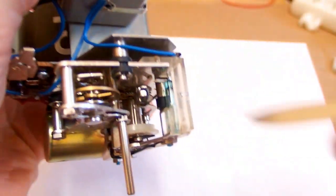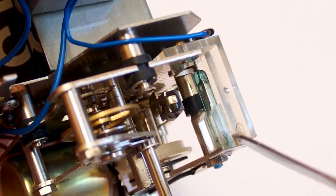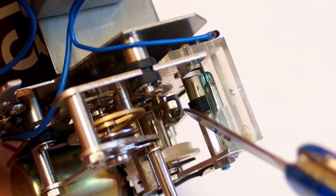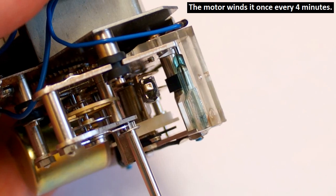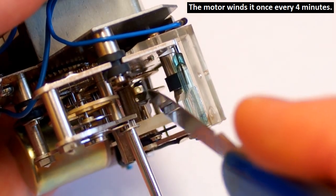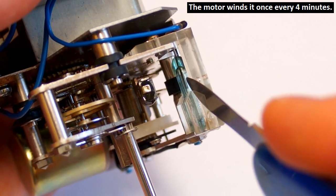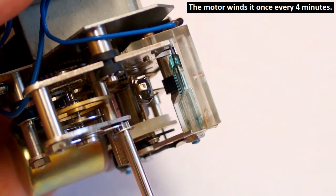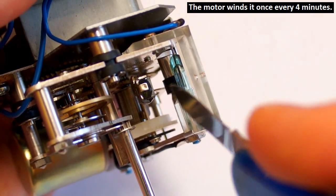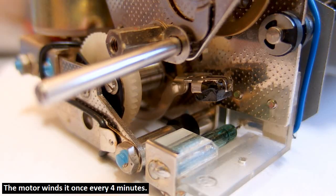And here you can see a reed switch in a glass tube, the green one, and a magnet here. When the spring is running out, this magnet falls down to the switch. It turns it on, activates the motor, and the motor winds the spring. And then this magnet goes back up. Let's wait for it.